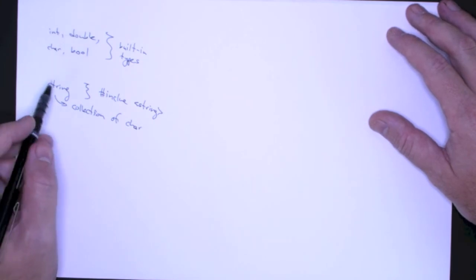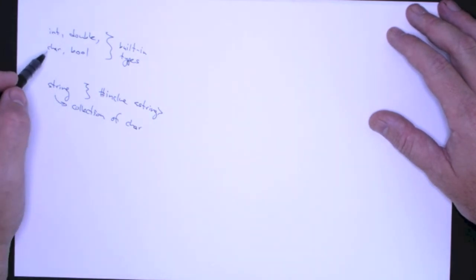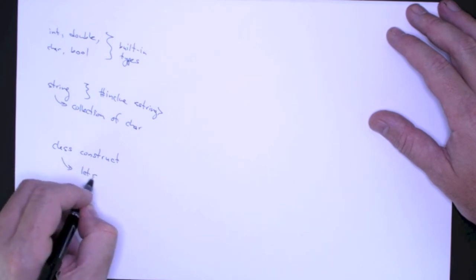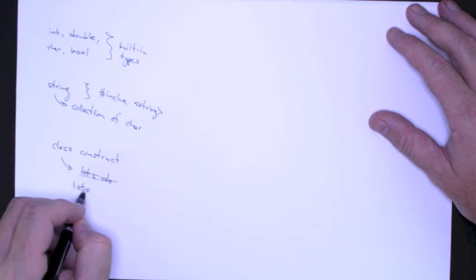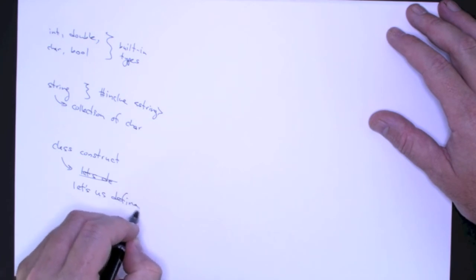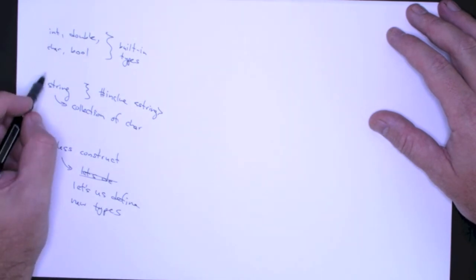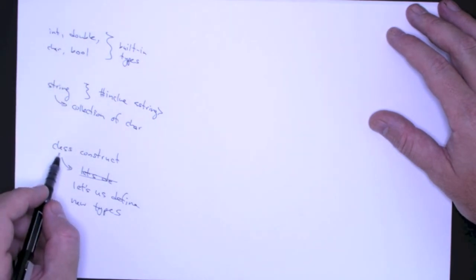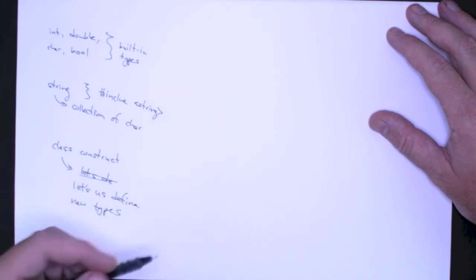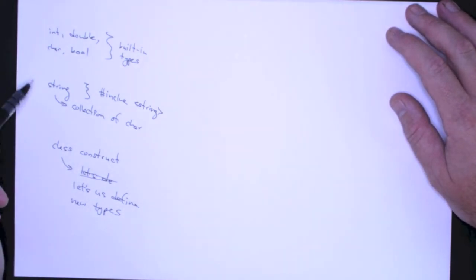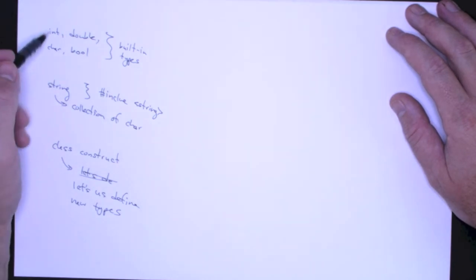There is the class construct. And what this does is it lets us define new types. So with the class construct, I can use characters to build a more complex type string. And of course, once I have string, then I can use the class construct to build even more complex types. And this is really where we get into design.